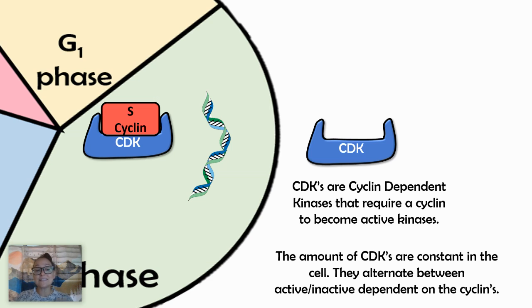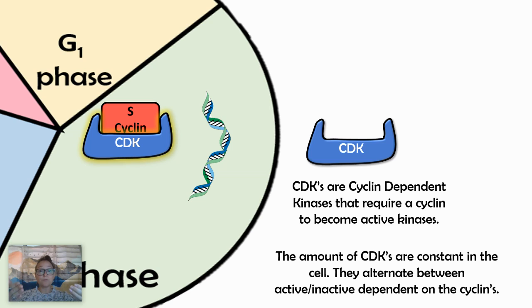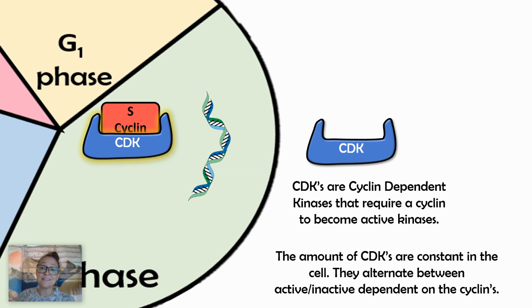Once the S cyclin attaches to the CDK, the CDK becomes active. The CDKs are always in the cell in a constant amount, but what cycles — that's where they get their name — are the cyclins. So when a cell receives a signal to divide, you have your signal transduction pathway, and the cell response is to produce cyclins. These cyclins attach to cyclin-dependent kinases and activate them. A kinase then phosphorylates other proteins and activates those.